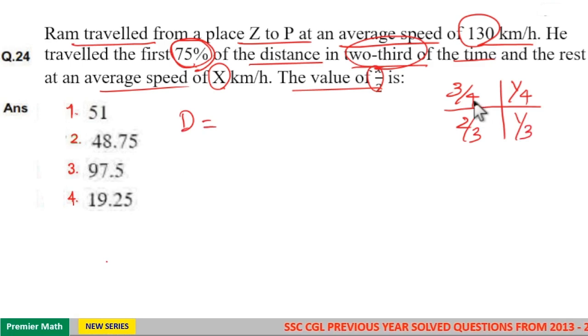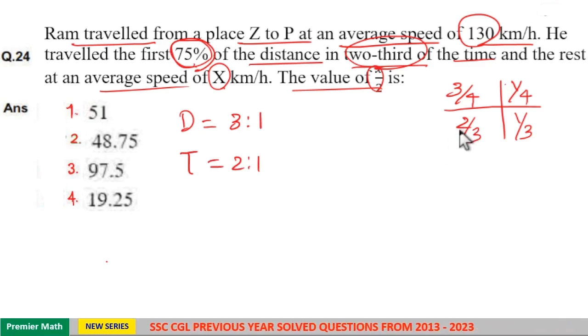Now you can see distance ratios. Total distance is four parts. Then first distance is three parts and second distance is one part. Same way time ratio is equal to two is to one. Total time is equal to three parts. First time two parts. Second time one part.